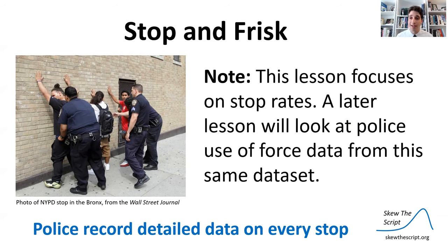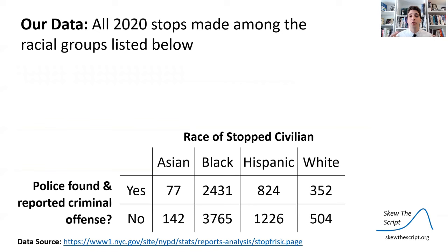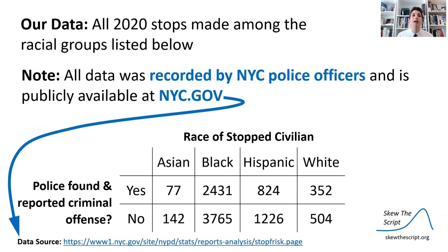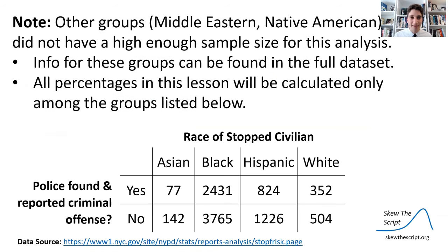This lesson will focus on stop rates, but there are also publicly available use of force rates from the full data set that we'll look at in a later lesson. Below, we have all 2020 stops made among the racial groups listed. These are all stops among these groups made in the year 2020, recorded by New York City police officers and publicly available on the NYC government website. Other groups exist in the full data set but did not have a high enough sample size to be included. Note that all percentages in this lesson will be calculated only among the groups listed here.